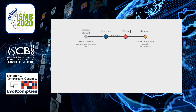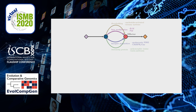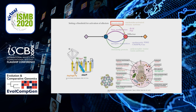However, undue effector deployment can be fitness-compromising for the host and needs to be tightly regulated. One such mechanism is by setting a threshold for activation of effectors. From previous studies in our group, we had anecdotal evidence for the involvement of proteins of the AAA+ ATPase family in effector deployment by creation of a threshold energy activation barrier.